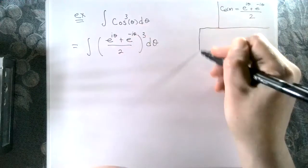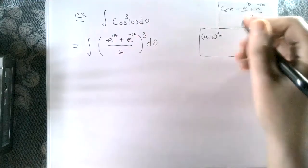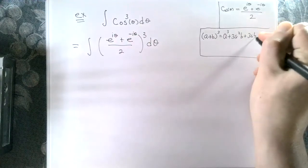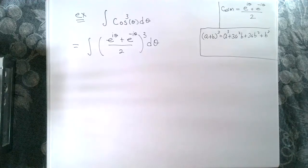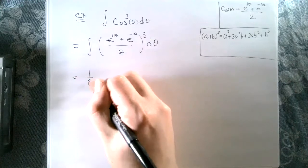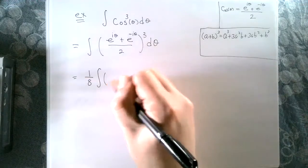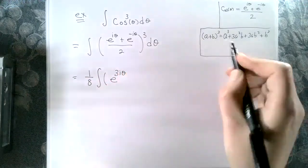It's helpful to note the binomial expansion: the quantity a plus b cubed equals a cubed plus 3a squared b plus 3ab squared plus b cubed. Two cubed is eight, so we have a factor of one eighth out front. The first term gives e to the 3i theta.